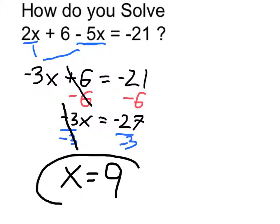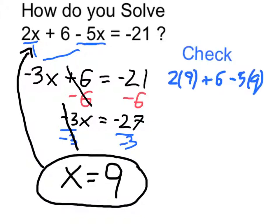So I am suggesting that 9 is the answer that plugs in and makes this true. Let's do a quick check. Plugging 9 into the original gives me 2 times 9, which is 18, plus 6, minus 5 times 9, which is 45.